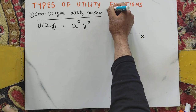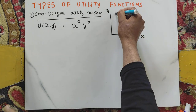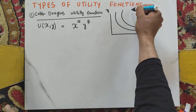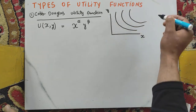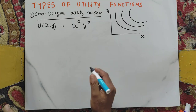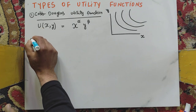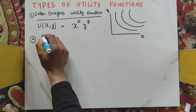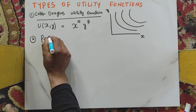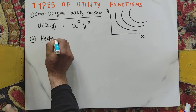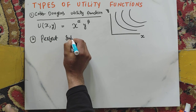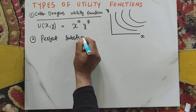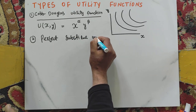The graph of the Cobb-Douglas utility function has good X on the horizontal axis and good Y on the vertical axis. The indifference curve has a typical bowed-inward shape.